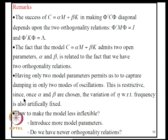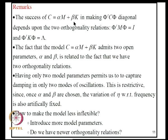Now let us examine the model C = alpha·M + beta·K in more detail. The success of this model in making Phi-transpose·C·Phi diagonal depends on two orthogonality relations: Phi-transpose·M·Phi being diagonal and Phi-transpose·K·Phi being diagonal. The two model parameters alpha and beta are directly related to these two orthogonality relations.